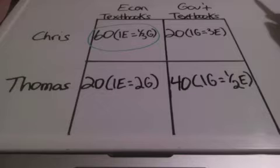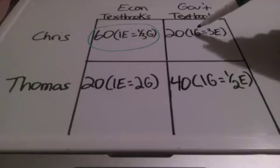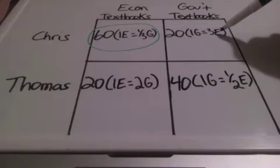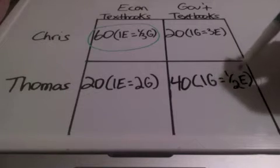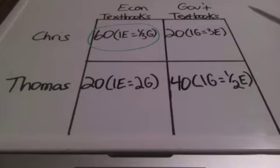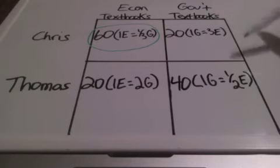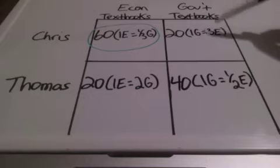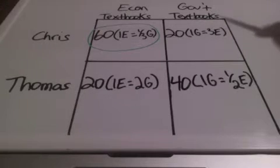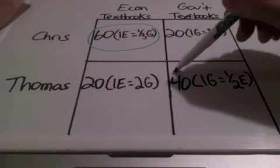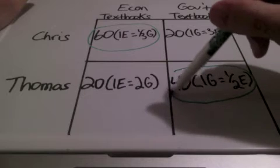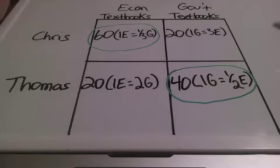Let's take a look at the government textbook side. For every one government textbook, Chris can produce three economics textbooks, and Thomas can produce one-half of an economics textbook. Who is giving up less of the economics textbooks? One-half would be less than three, so Thomas has a comparative advantage in producing government textbooks.